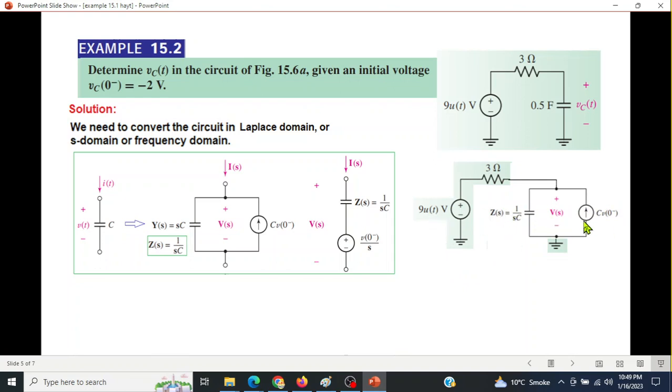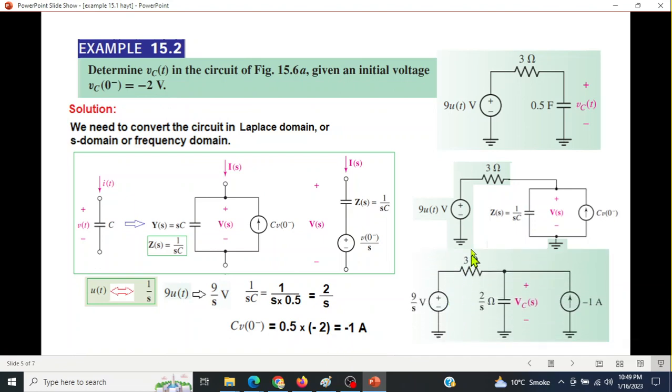The equivalent circuit now looks like this: changing the capacitor with 1/(SC) and CV₀. Now finding the S domain values: u(t) is 1/S, so 9u(t) will be 9/S. Then 1/(SC) becomes 2/S. CV₀: C is 0.5, V₀ is -2, giving CV₀=-1. Now this is our circuit in S domain.